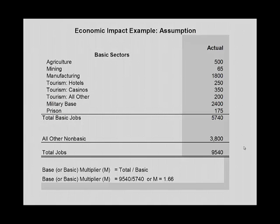Total jobs is 9,540. So our multiplier is 9,540 divided by our basic sector of 5,740 jobs, which equals 1.66. That multiplier means that for every basic job in the economy, there are 0.66 non-basic jobs.